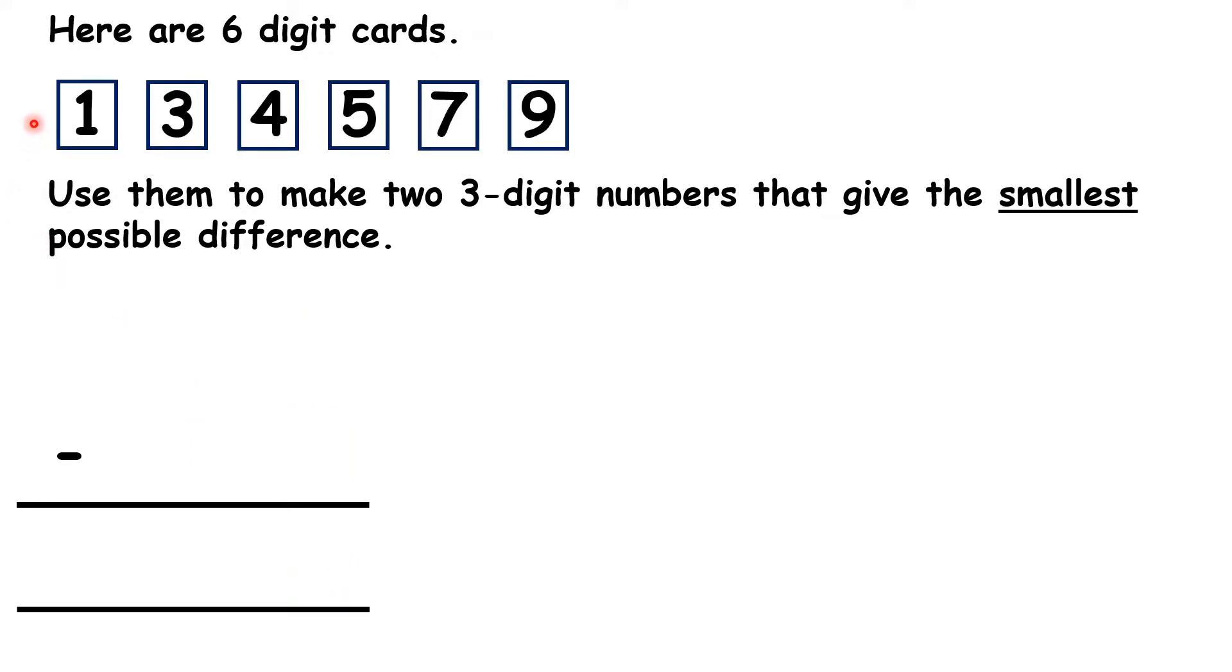So now, a slightly different question, and this is where it gets even more confusing. We have the same digit cards, but this time we need to use them to make two three-digit numbers that give the smallest possible difference.